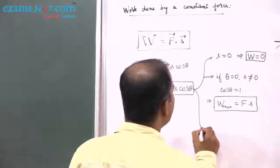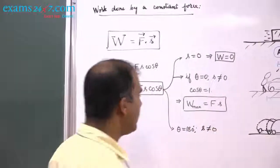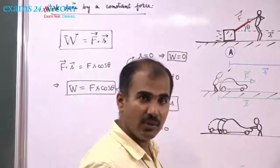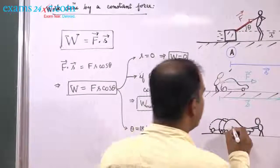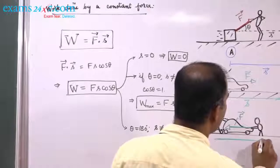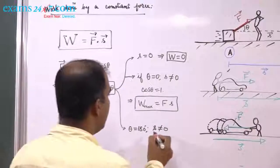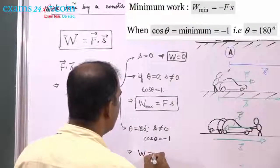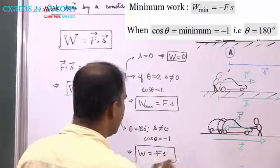Now consider θ equals 180° and displacement is not zero — the force is opposite to the displacement. For example, a car is coming towards you and you push on the bonnet applying force in the opposite direction to the displacement. The displacement of the car is forward, so the angle between F and S is 180°; cosθ equals −1, which implies work done equals −F times S. Notice this is the minimum work done.